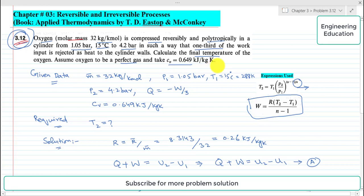So first of all, the given data is: molar mass is given which is 32 kilogram per kilomole. Pressure at initial state before compression is P1 and it is 1.05 bar.